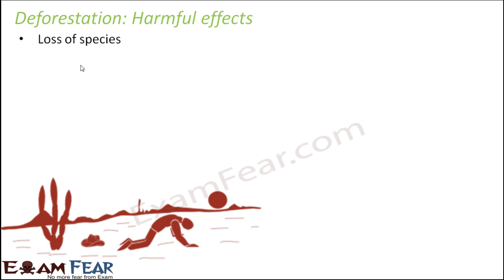First is loss of species. When we cut down forests on a large scale, we are finishing off an entire forest. There are a lot of animals, birds, and insects living in that forest. When you cut down the forest, you are snatching away the habitat from all those animals. They lose their habitat, they do not have food, they do not have shelter, and so a lot of species are lost — they are not able to survive and they die.